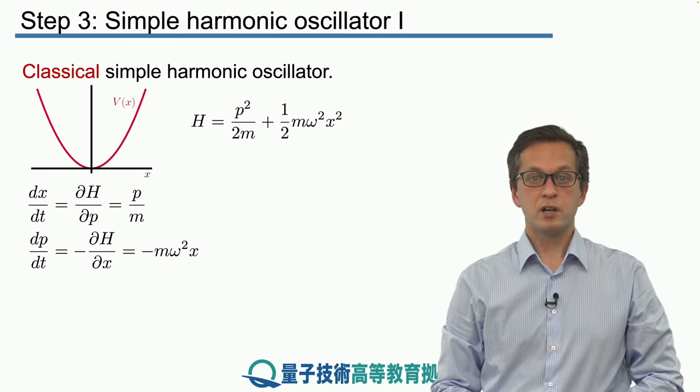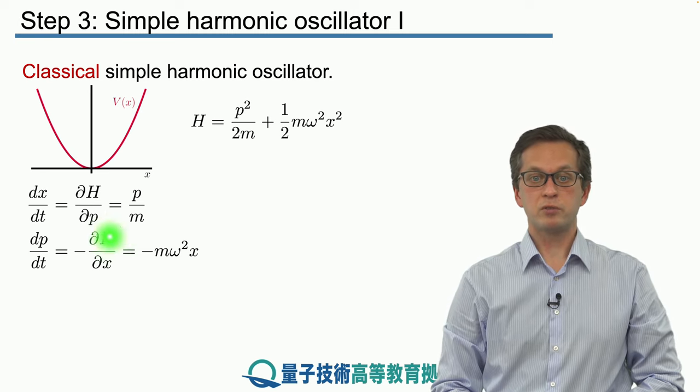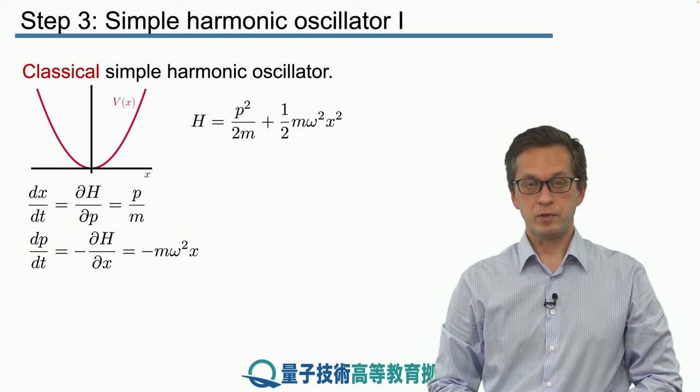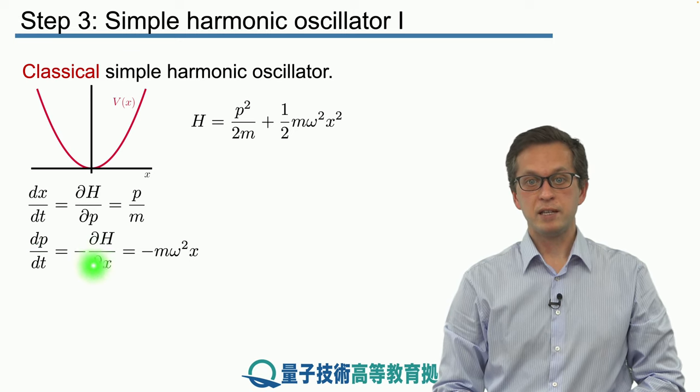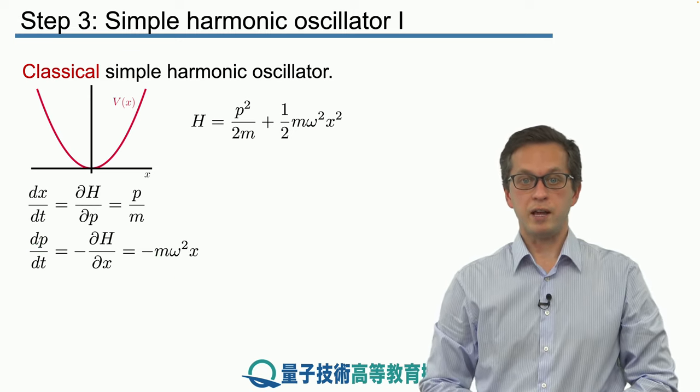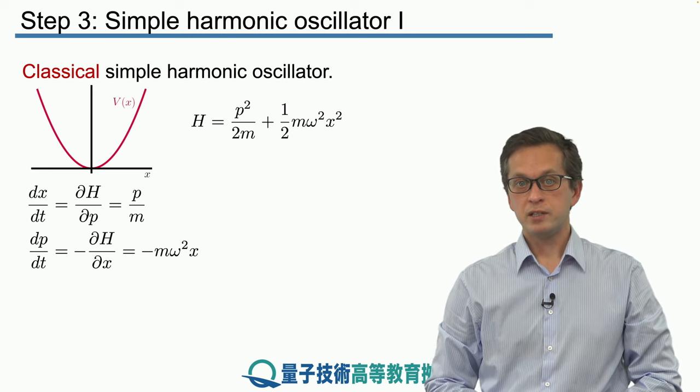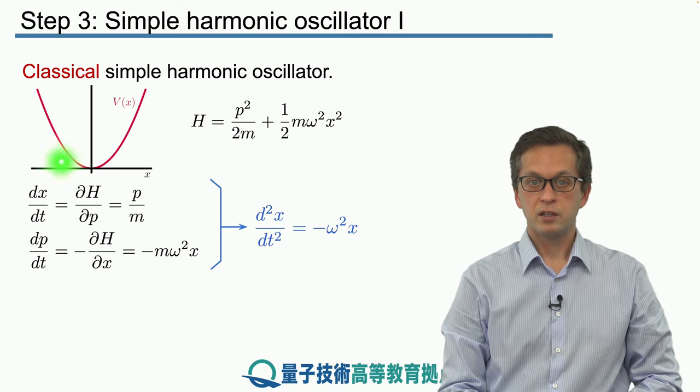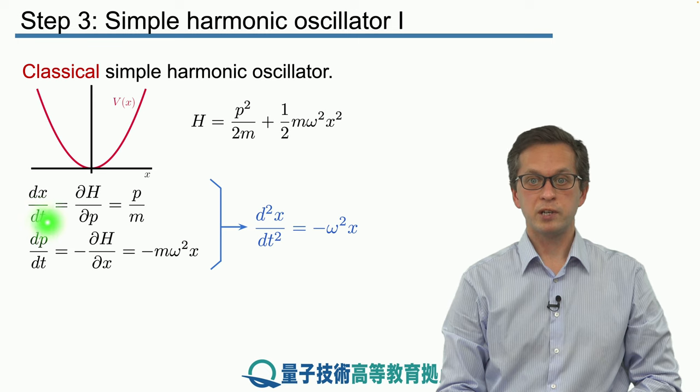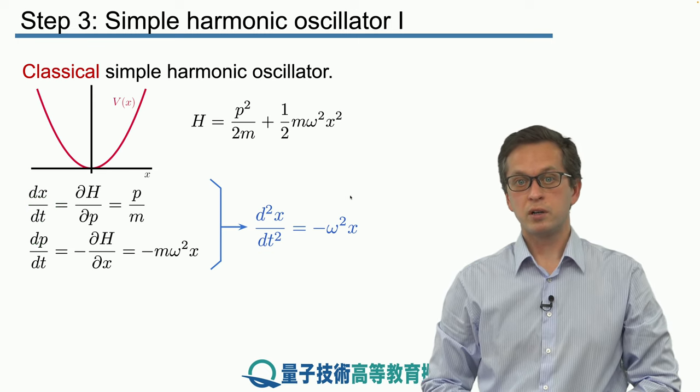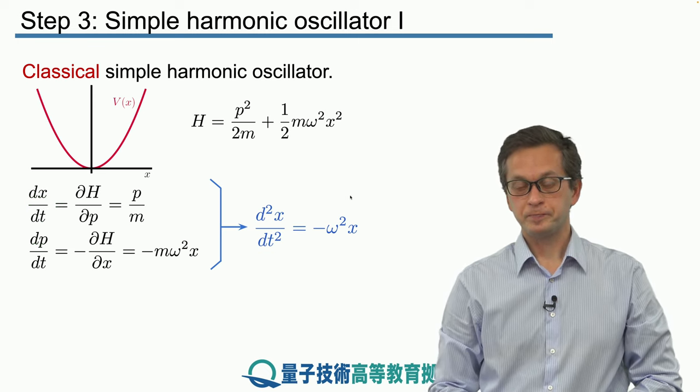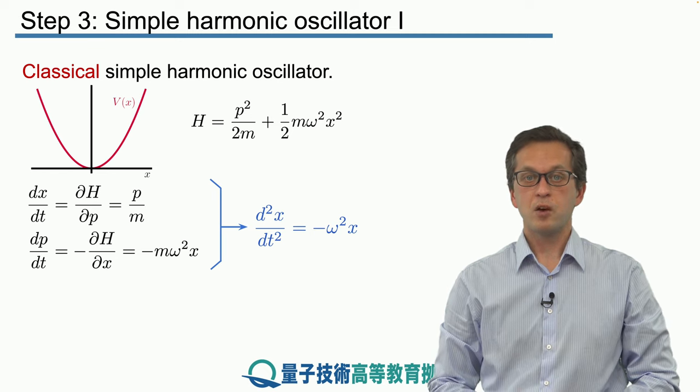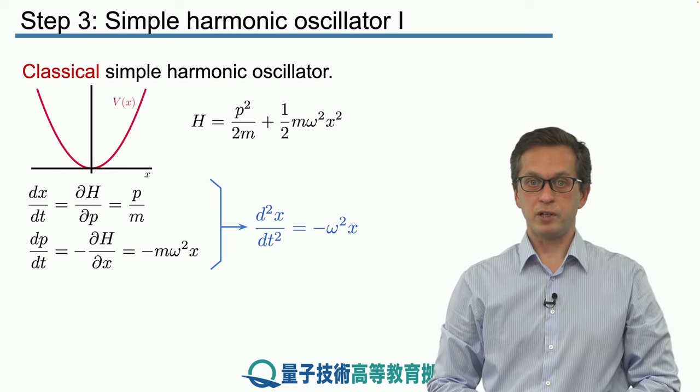If we apply Hamilton's equations, we get dx by dt equal to p over m, which we have seen in the previous step, and dp by dt is minus m omega squared x. How do we see that this is really the simple harmonic oscillator? We can differentiate dx by dt with time one more time and obtain d2x by dt squared equals minus omega squared x, which we recognize as the equation for the simple harmonic oscillator.